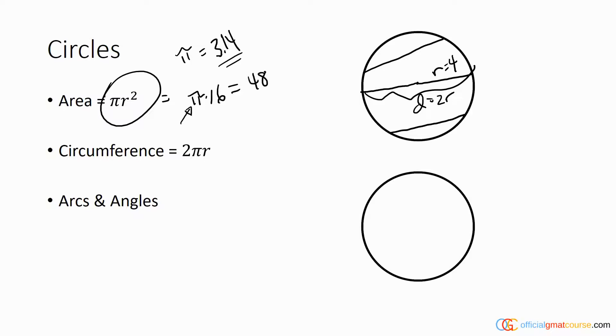Circumference is equal to 2 pi r, and the circumference is basically the perimeter of a circle, so it's the distance all the way around a circle. Whereas area is measured in square units, circumference is just a distance, so it's not measured in square units—it would just be measured in feet, for example.